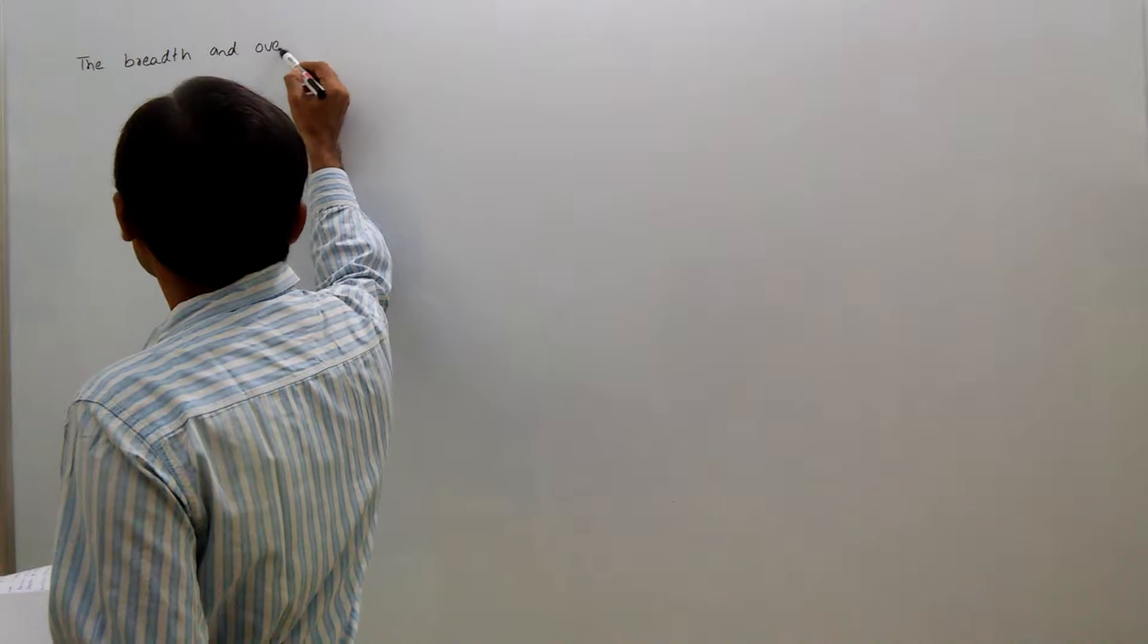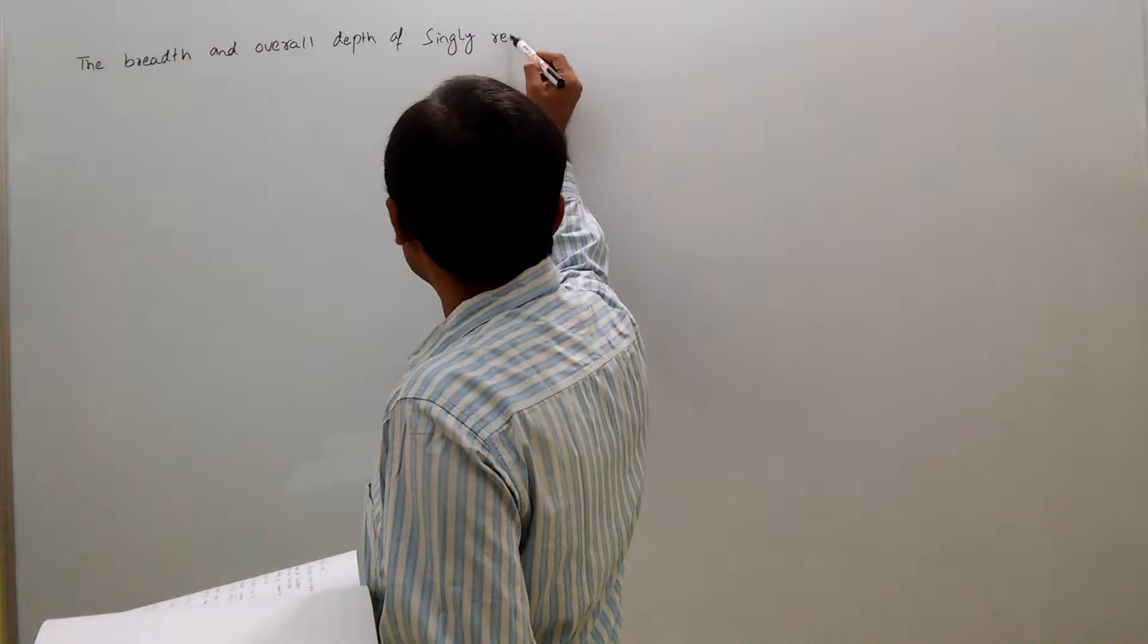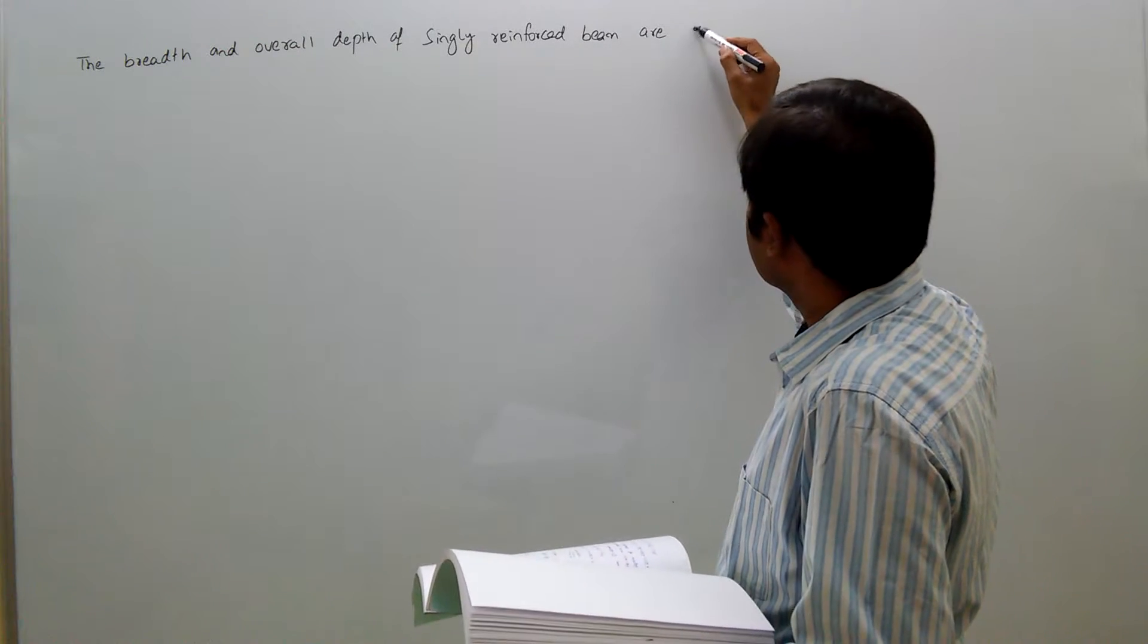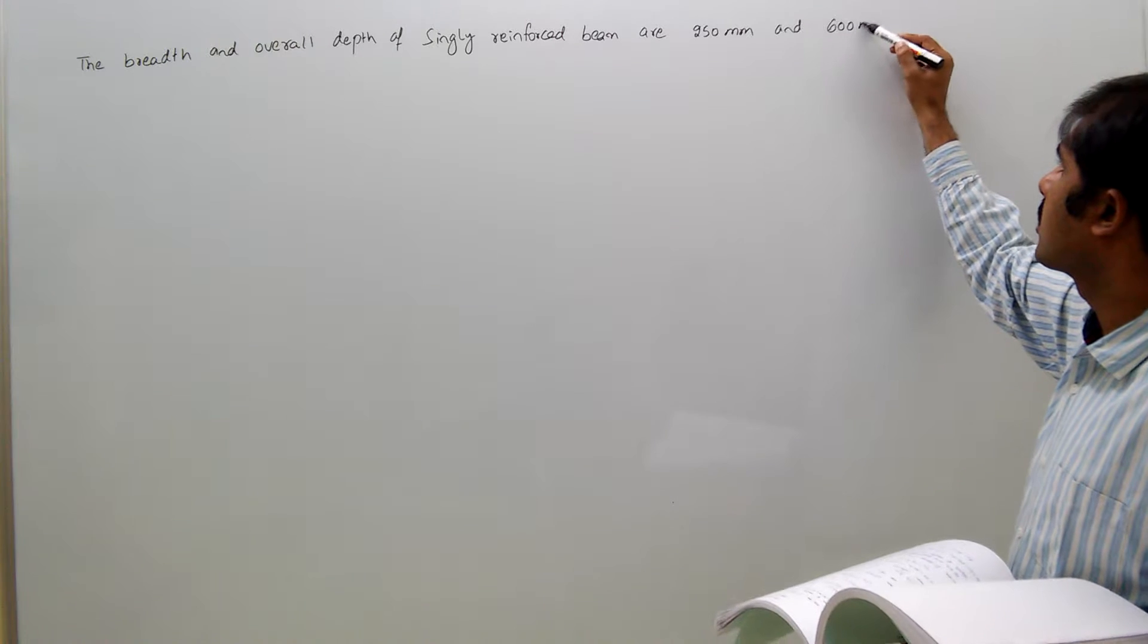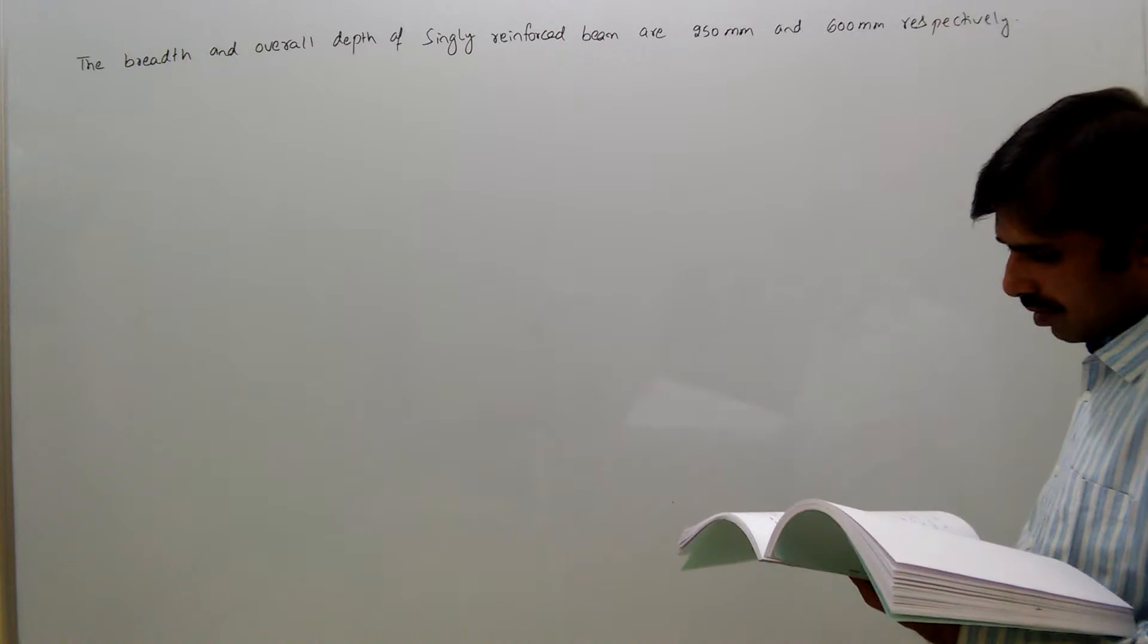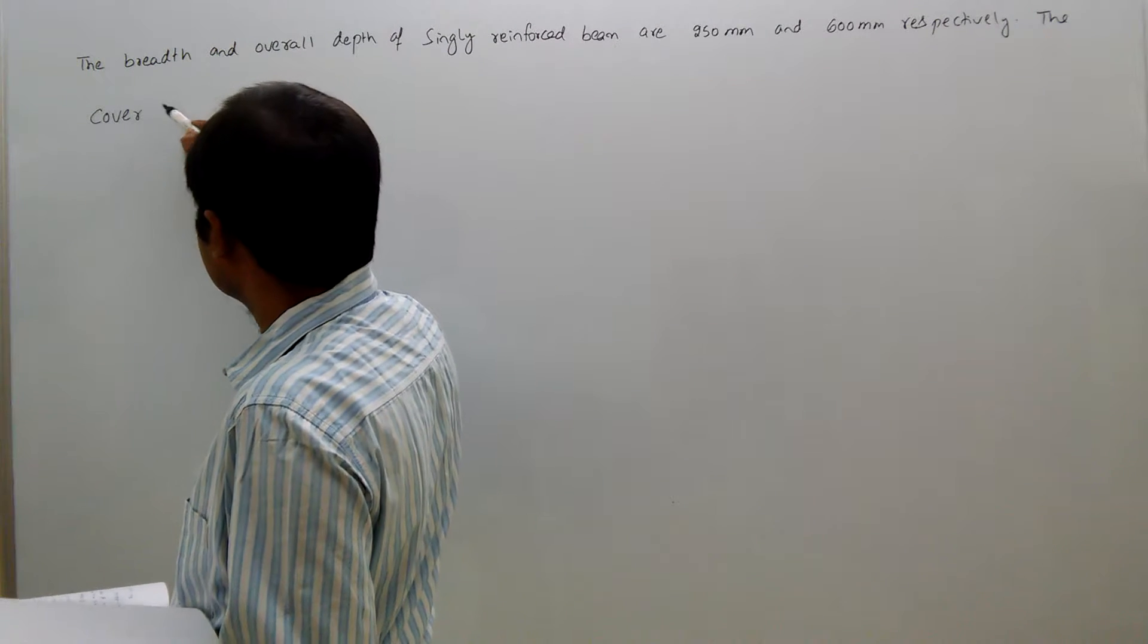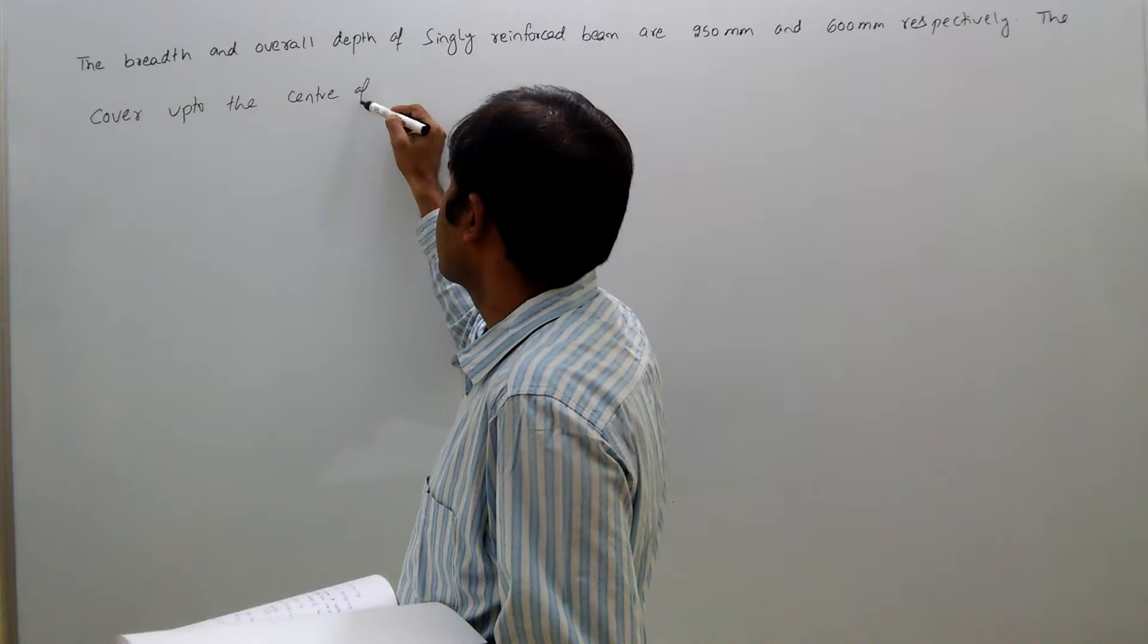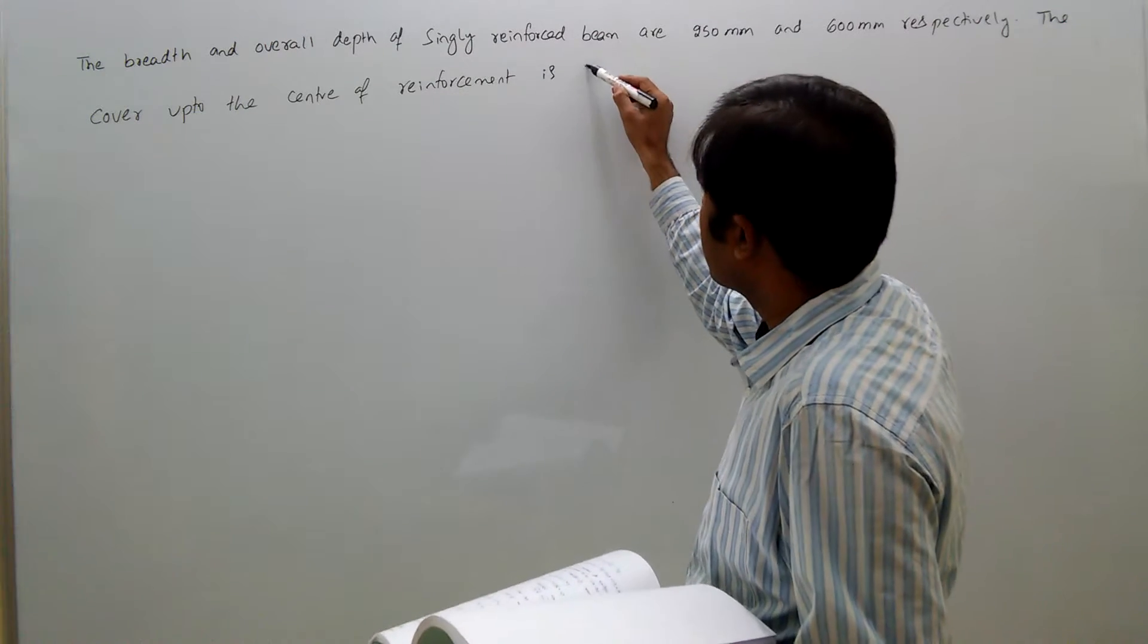The breadth and overall depth of a singly reinforced beam are 250 mm and 600 mm respectively. The cover to the center of reinforcement is 30 mm.